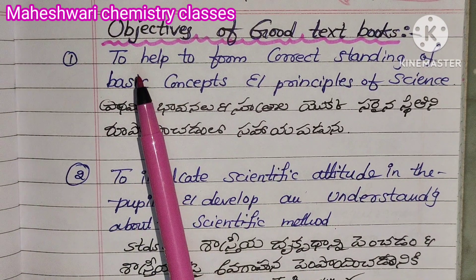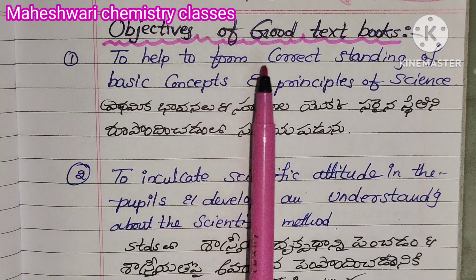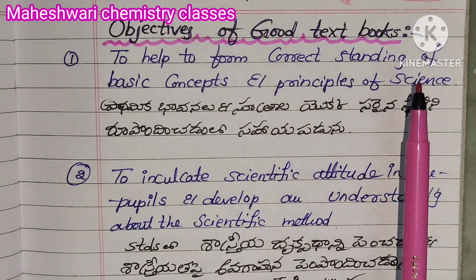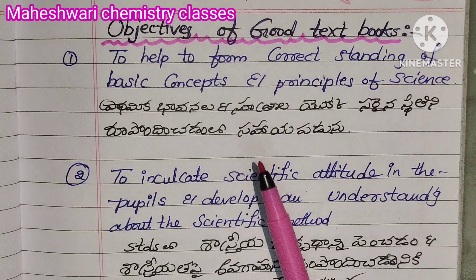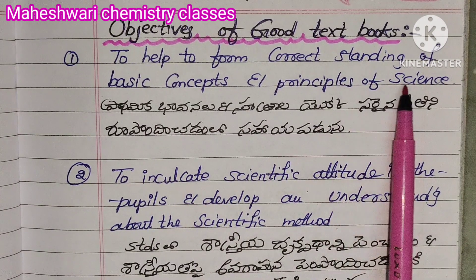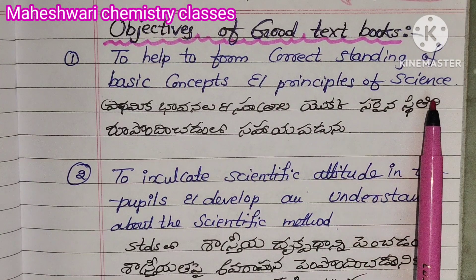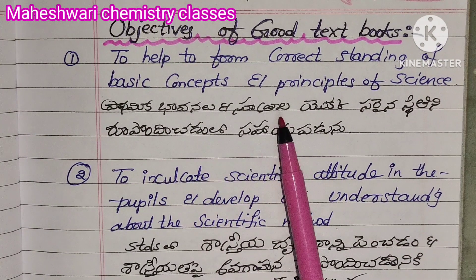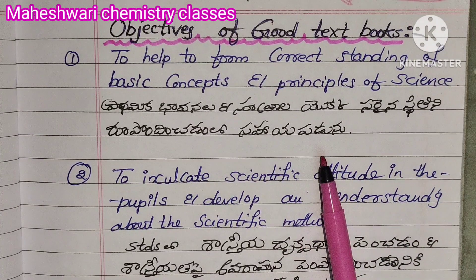First objective: to help form correct understanding of basic concepts and principles of science. This helps students grasp foundational ideas and principles clearly.